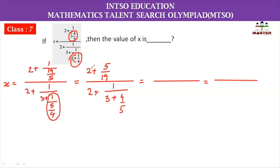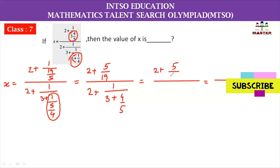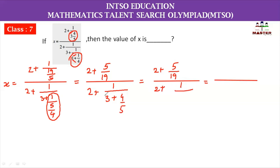Now the numerator becomes 2 plus 5 by 19. For the denominator, we simplify 2 plus 1 whole divided by 3 plus 4 by 5. Since 3 is the whole number and 4 by 5 is the fraction part, using cross multiplication: 3 times 5 is 15, and 15 plus 4 is 19, giving us 19 divided by 5.